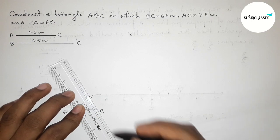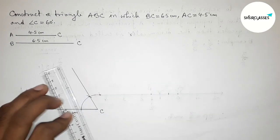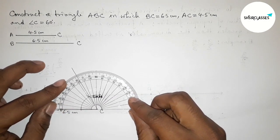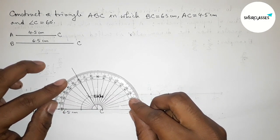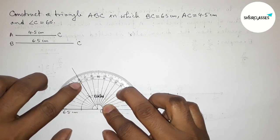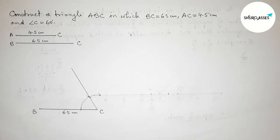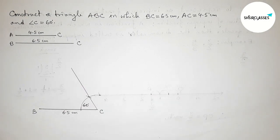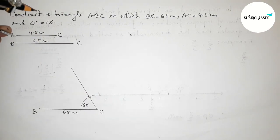So next, joining this line to get here a 60-degree angle perfectly. Now I am going to check whether it is 60 degrees or not. So this is perfectly a 60-degree angle. Here angle C equals 60 degrees.